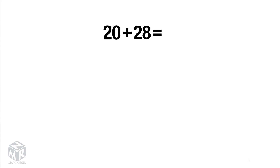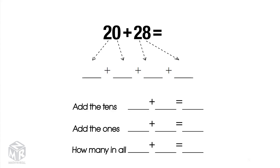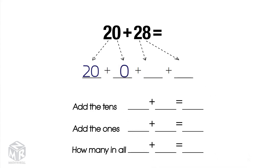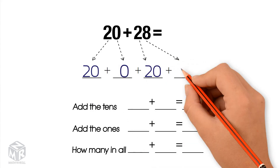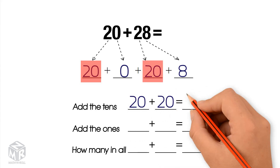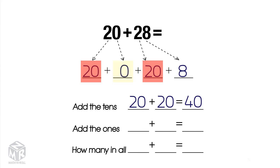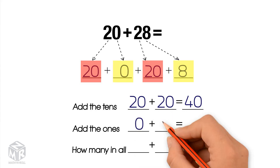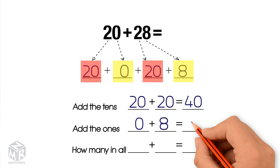Let's try another example: 20 plus 28. 20 breaks apart into 20 and 0. 28 breaks apart into 20 and 8. Now we add the tens: 20 plus 20 equals 40. Next, we add the ones: 0 plus 8 equals 8.